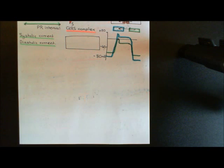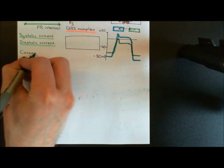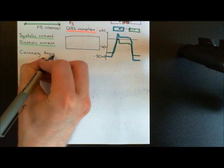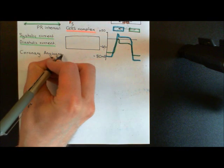Firstly I want to talk about another investigation that can be done into coronary artery disease — one that will allow you to find specifically which coronary artery has got the blockage in it. This investigation is what's known as coronary angiography. Angio means pertaining to blood vessels, graphy means imaging, so we're imaging blood vessels — coronary angiography specifically means imaging the coronary blood vessels.